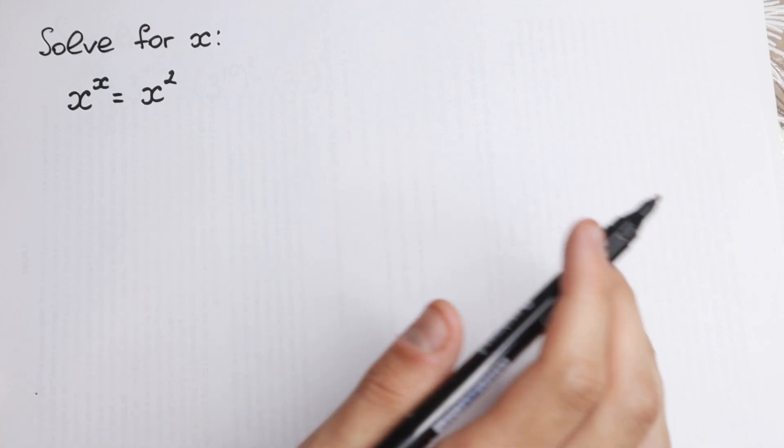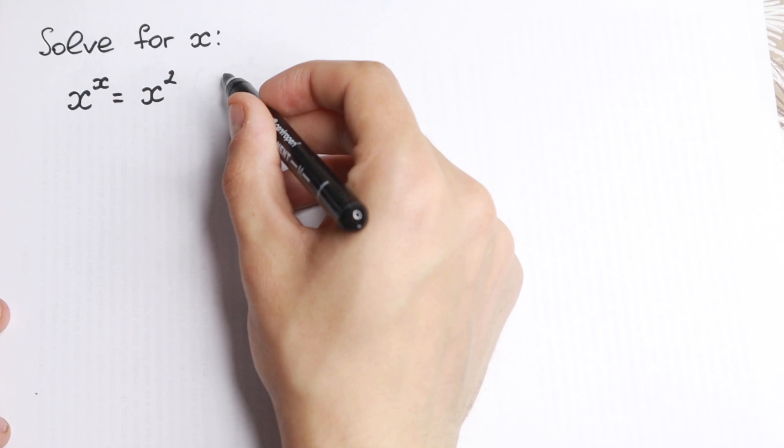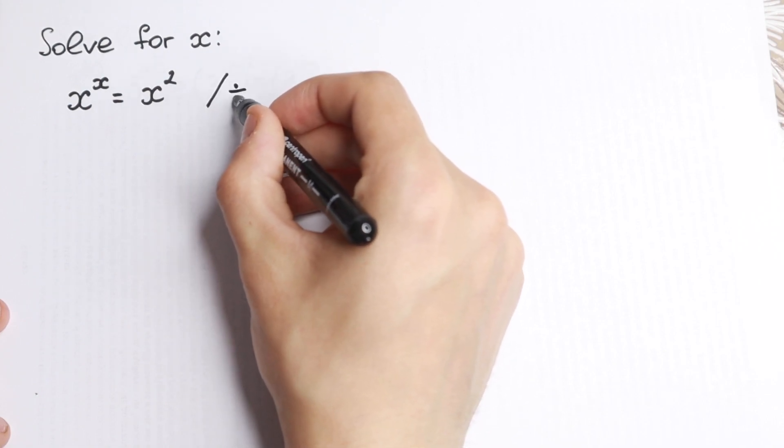How can I do this? I want to show you a really good approach. First of all, we need to divide both sides by x square. So let's do this. Let's divide both sides by x square.